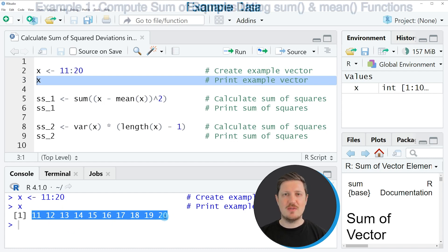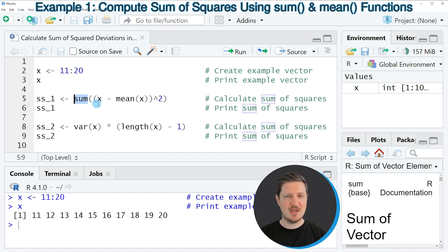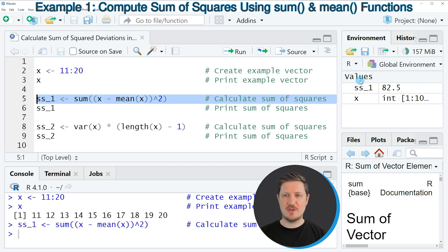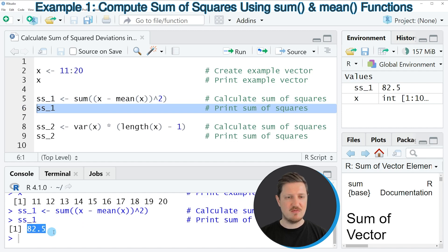Now if we want to calculate the sum of squared deviations of this data object, we can use the sum and mean functions as you can see in line 5 of the code. So if you run this line of code, you can see at the top right of RStudio that a new data object is appearing, which is called SS underscore 1. And we can print this data object to the RStudio console by running line 6 of the code. And then you can see that the value 82.5 is returned. And this value is the sum of squared deviations of our input data object X.